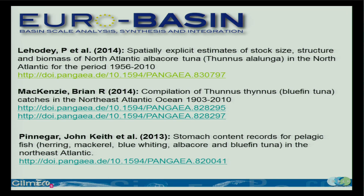Another example is stomach contents of pelagic fish — herring, mackerel, blue whiting, albacore, and bluefin tuna — always in the North Atlantic because EuroBasin is specific to basin-scale modeling of the North Atlantic. That's also available and was mentioned as a needed data product.